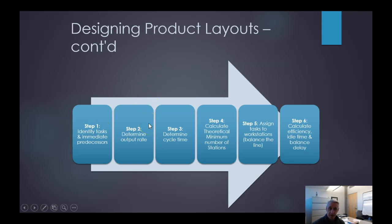Then we have to determine the output rate. Then we have to determine the cycle time. Then we're going to calculate the theoretical minimum number of stations required so that we can determine what we want for the output rate. Then we can assign tasks to different workstations and balance the line. Then we can calculate our efficiencies when we're done. So we're going to go through this six-step process step-by-step in this recording.